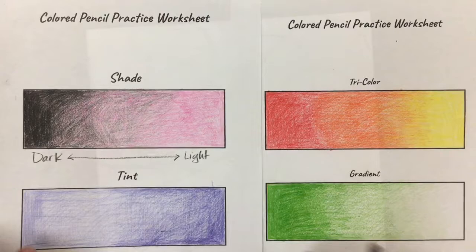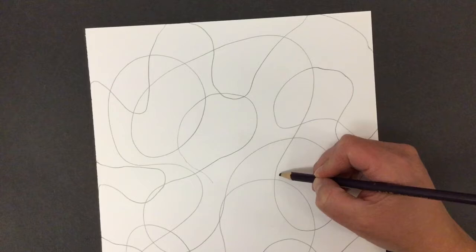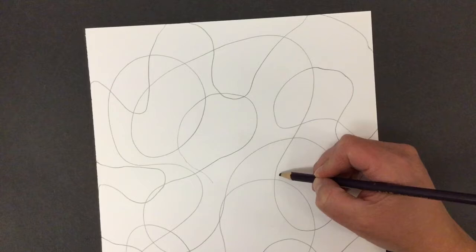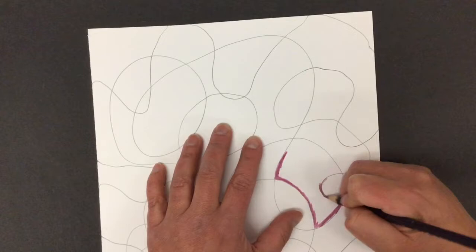Okay, so gradient actually refers to tint and shade. I'm going to start with gradient. I picked up my color here, and I'm picking one shape that I just made out of these loop-de-doops. And I'm going to color part of it dark and part of it light.